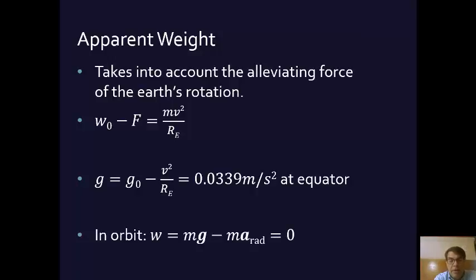In orbit, because you're in a perfect balance between the force of the Earth and the force of the tangent going around the Earth, they cancel each other out. And so, that's why you have apparent weightlessness when you're in orbit because the force of your rotation and the force of the gravity caused by gravity are going to cancel each other out.